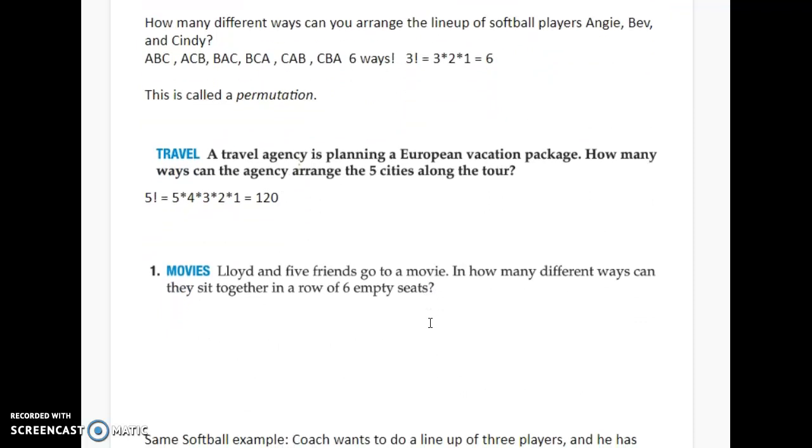Lloyd and five friends go to a movie. How many ways can they sit together in a row of six empty seats? How many people are there? Six. Okay, do a factorial of that. So six, five, four, three, two, one. And what do you get this time? It should be 720.